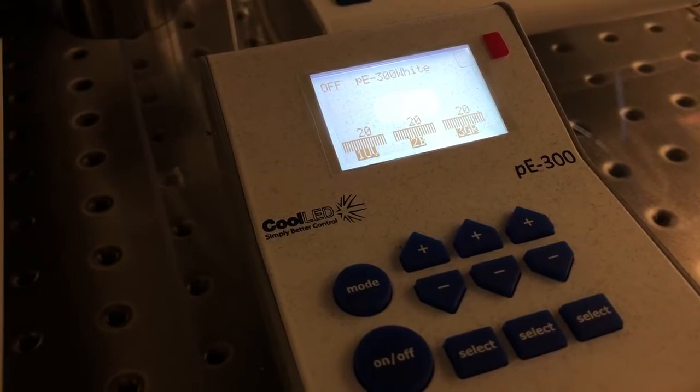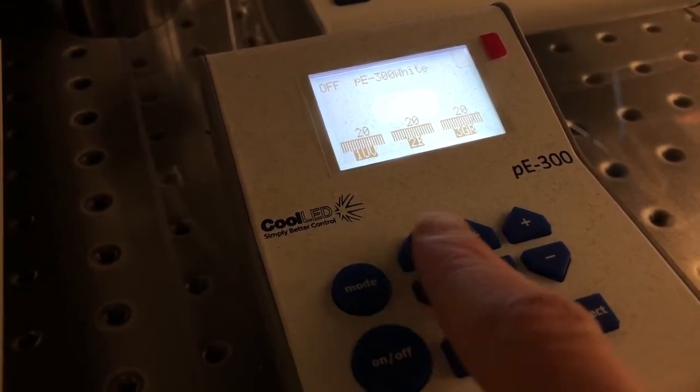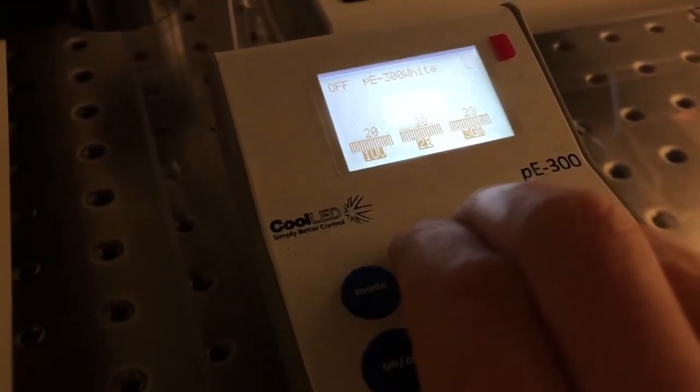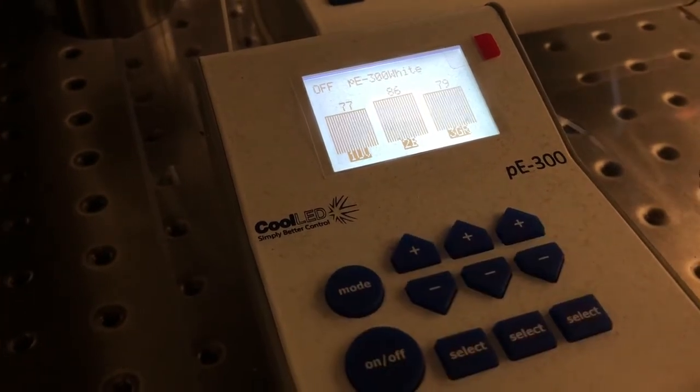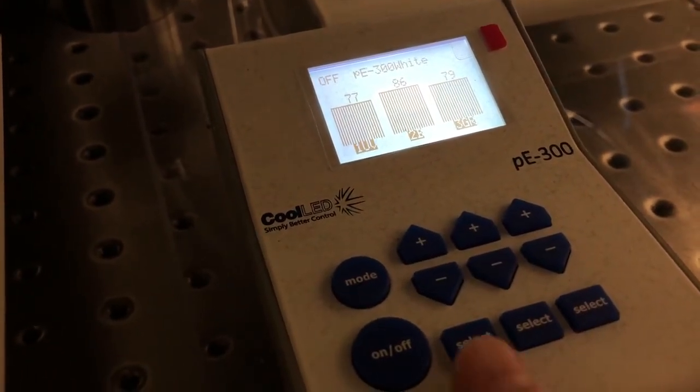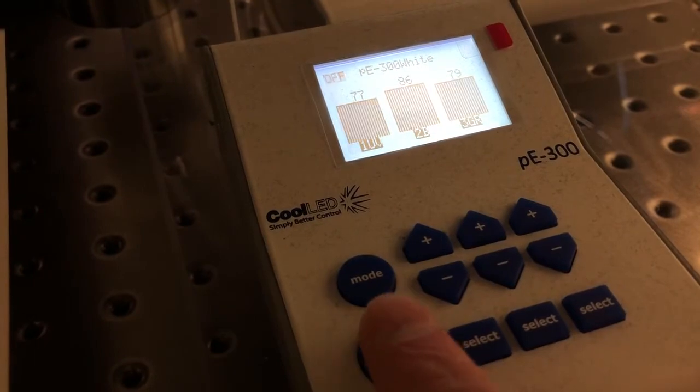If you need to increase the intensity of illumination, you can push these three buttons up to get brighter light when you turn on the illumination by pressing this button.